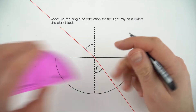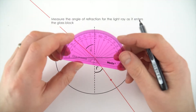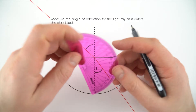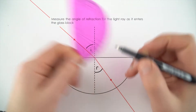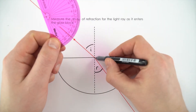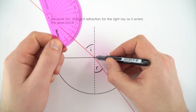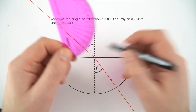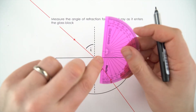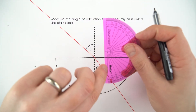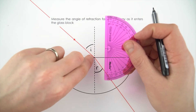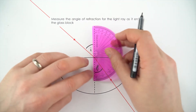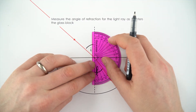To do that I'm just going to use my protractor. I'm going to line up the centre of the protractor with this point here — that's where the ray of light is actually bending — and I'm just going to line up this black line on the inside of the protractor with the normal line down here.